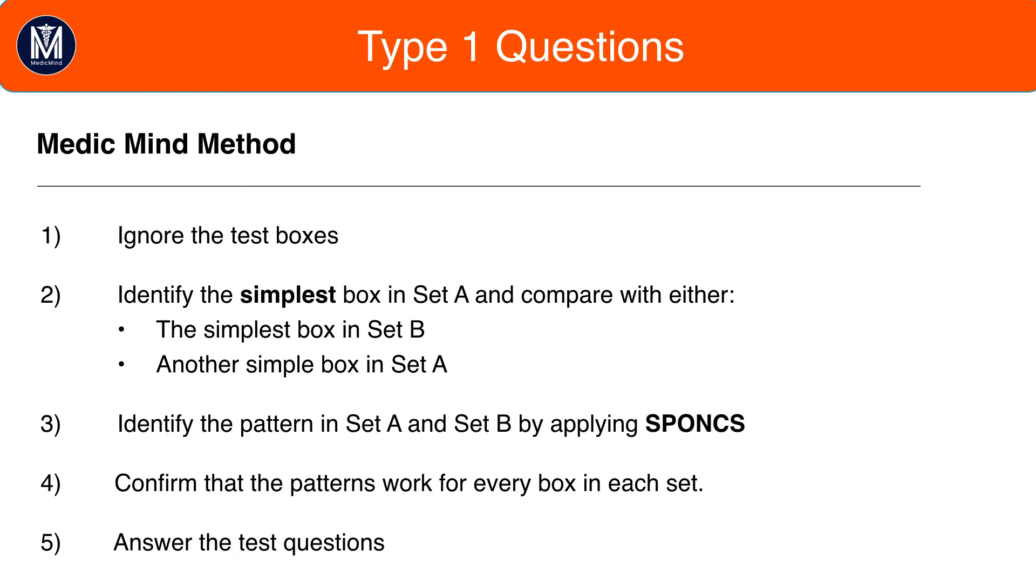Step three, identify the pattern in Set A and Set B by applying Sponks, which is the list of all possible patterns, which we'll come across in the next tutorial lesson. Step four, confirm that the pattern works for every box in each set, and five, answer the test questions.